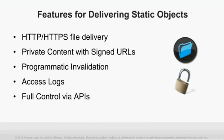We give you access logs placed in an Amazon S3 bucket that you specify. These access logs have the full record of every single request made for your content from any CloudFront edge location around the world, so you can understand the behavior of your visitors — what files they're downloading, where they're downloading from. A number of partners have tools that can take CloudFront access logs and give you meaningful charts and reports. Finally, we give you full control over your CloudFront configuration via APIs. Most customers prefer to use the management console UI, but many also use the programmatic API access to build CloudFront configuration into their applications.